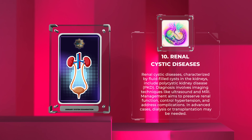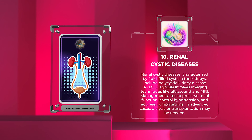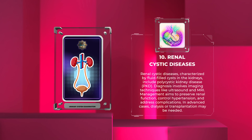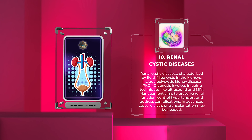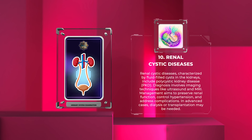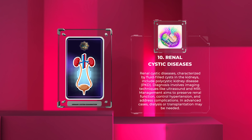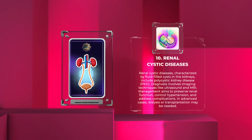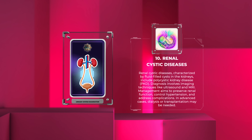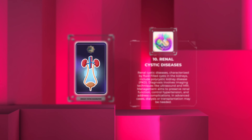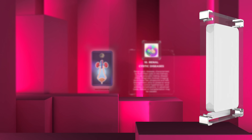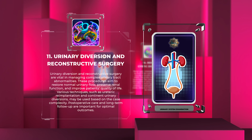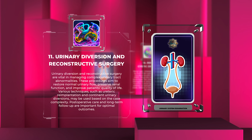Renal cystic diseases, characterized by fluid-filled cysts in the kidneys, include polycystic kidney disease (PKD). Diagnosis involves imaging techniques like ultrasound and MRI. Management aims to preserve renal function, control hypertension, and address complications. In advanced cases, dialysis or transplantation may be needed.